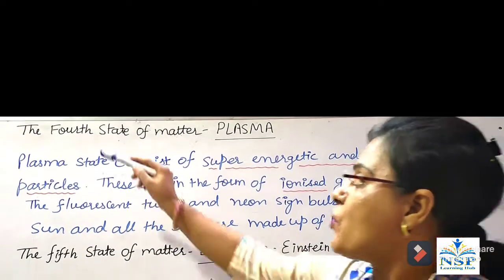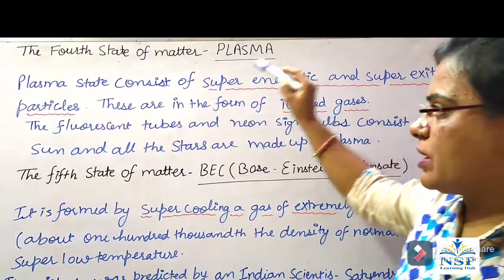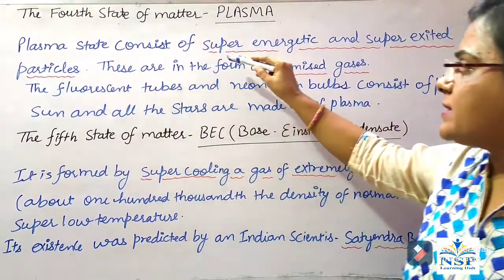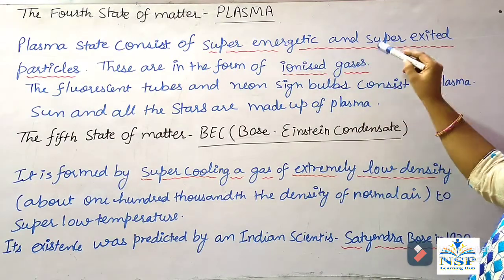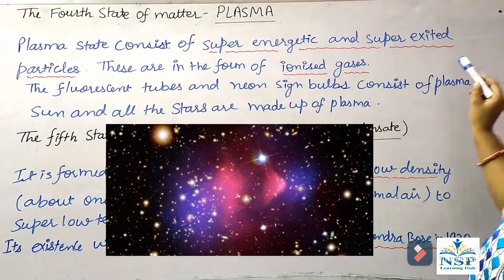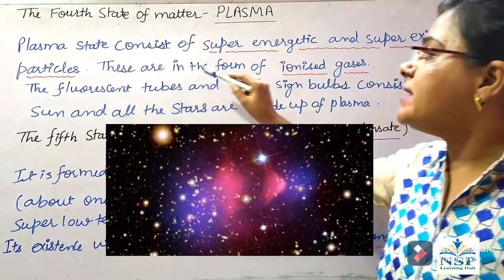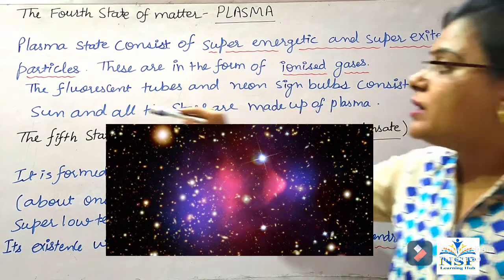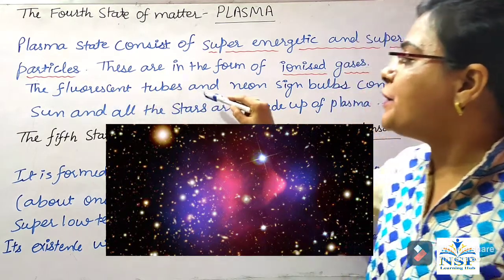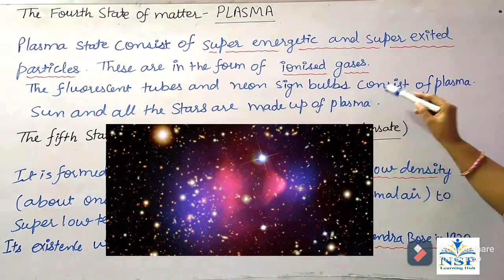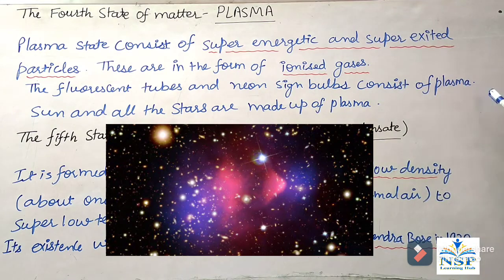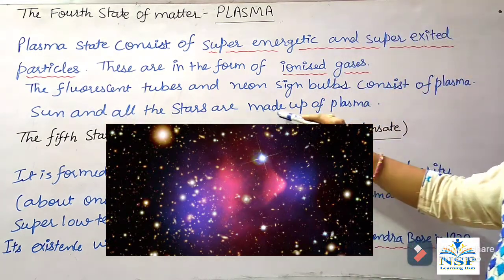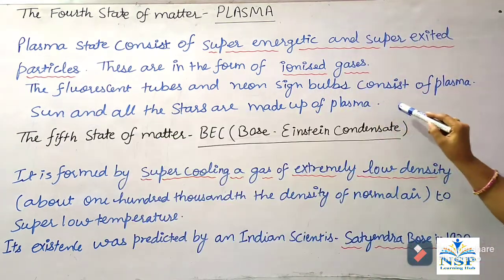Students, the fourth state of matter is plasma. Plasma state consists of super energetic and super excited particles. These are in the form of ionized gases. The fluorescent tubes and neon bulbs consist of plasma. Sun and all stars are made up of plasma.